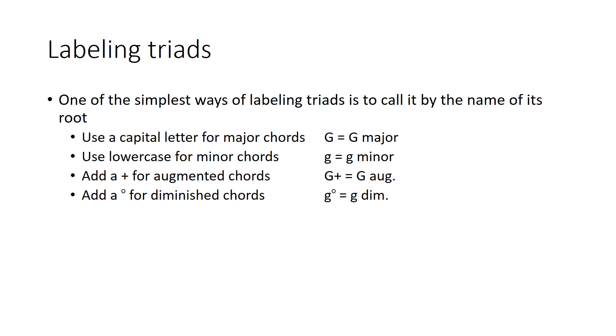Put a plus after an uppercase letter, and you'll have an augmented chord. So G plus is G augmented. And then put a diminished sign, or sometimes known as a degree sign, after a lowercase letter, and you get diminished. So here's G diminished. So these are the labels we'll be using when we're just describing a chord outside of a key. Later we'll use Roman numerals to do a similar thing.